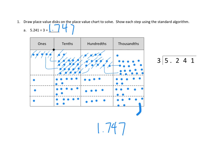Now let's take a look at our standard method. The number we started with is our dividend, so that goes underneath our division bracket — 5.241. The divisor, the thing we're dividing by, is three, and it goes right out front. Up here, we're going to figure out the quotient. When we do standard division, we are doing the exact same thing we did in the place value chart, only we don't have to draw a million dots.